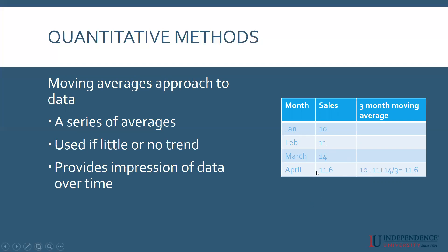What's it going to be in May? Well, 11 and 14 and 11 are 36 divided by three, so it's going to be 12. You take the three time periods you choose, average it out, and that is your forecast for that particular month. Short term, this works very, very well. Between naive and moving averages, those are the basis for quite a number of the different numerical methods for figuring out a forecast.